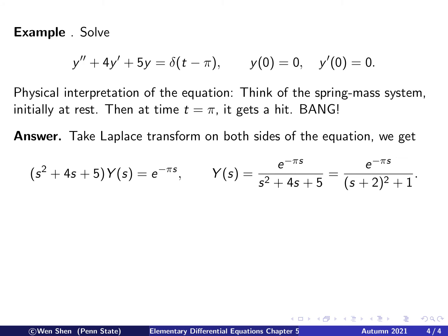Taking the Laplace transform of both sides: on the left we get (s squared plus 4s plus 5) times Y(s), equal to the Laplace transform of delta(t minus pi), which is e to the negative pi s. Solving for Y(s) algebraically gives the right hand side over the left hand side. Working the denominator into a familiar form: s squared plus 4s plus 5 equals (s plus 2) squared plus 1, which suggests the inverse transform will involve exponential times sine or cosine.